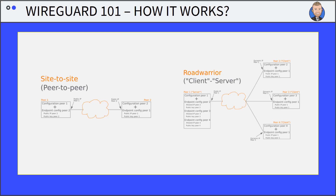For multiple peers, you can specify IP addresses or network addresses with a subnet mask separated by a comma. Traffic is only sent through the tunnel for those allowed IP addresses. In the sending direction, this list behaves like a routing table. In the receiving direction, it serves as an access control list.